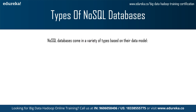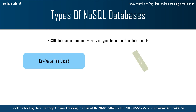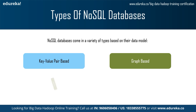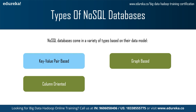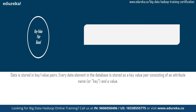NoSQL databases come in a variety of types based on their data models: key-value pair based, graph based, column based, and document based. We will now see each of these NoSQL database types one by one.